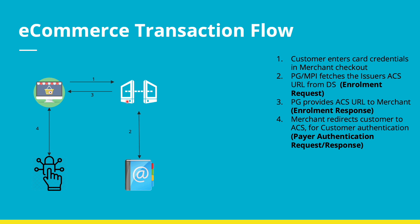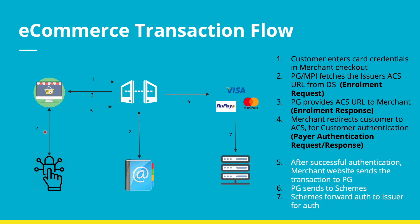Once this cardholder authentication is done, then we go for the authorization, where the PG and acquirer build an authorization message and sends it to the schemes for authorization. This first leg is where we authenticate and the second leg is where we authorize the particular transaction. And in 3DS 1.0,